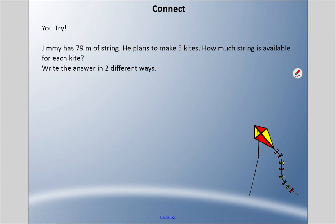I'm going to get you to try a couple situations. Jimmy has 79 meters of string and plans to make five kites. How much string is available for each kite? I'd like you to answer this in two different ways. Pause it and come back when you're ready.